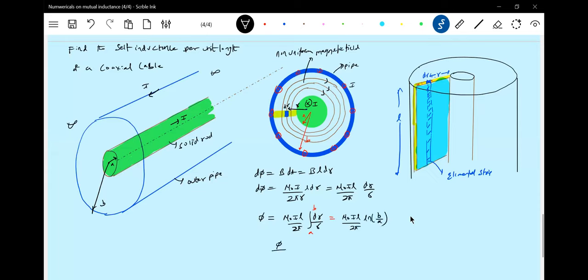So flux linking to the current is what? The self inductance. This is per unit length, because L is what? One. I is missing here. Self inductance per unit length.